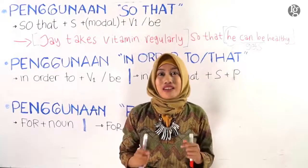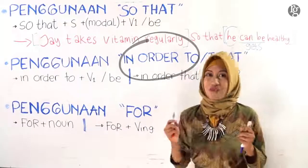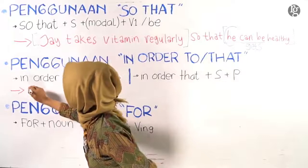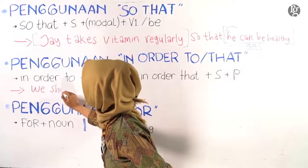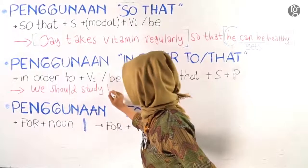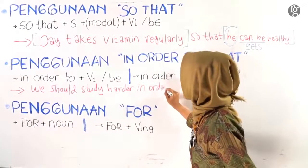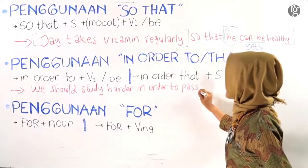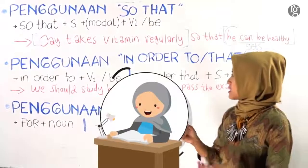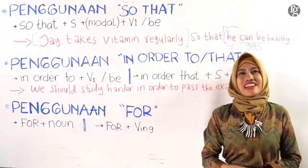Kita lanjut ke penggunaan conjunctions of goals yang kedua yaitu 'in order to' atau 'in order that'. Kakak akan tulis kembali contohnya: We should study harder in order to pass the exam.